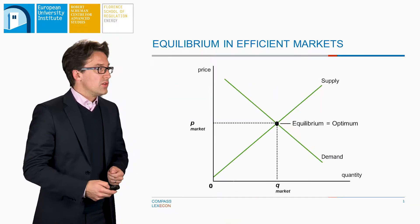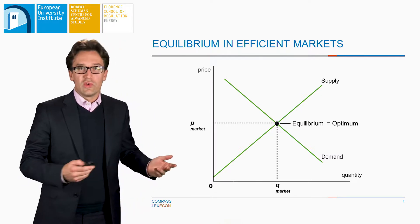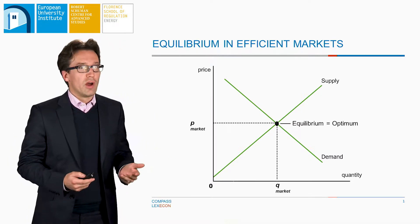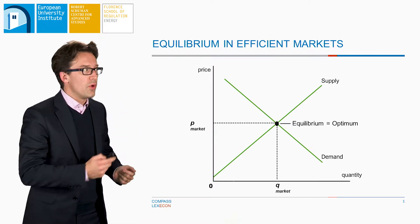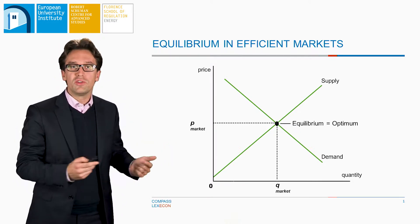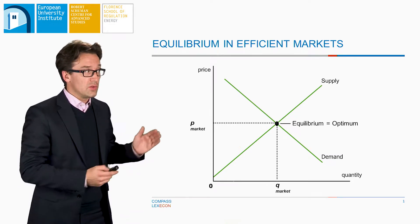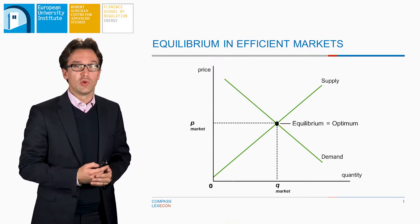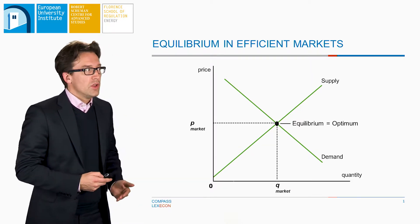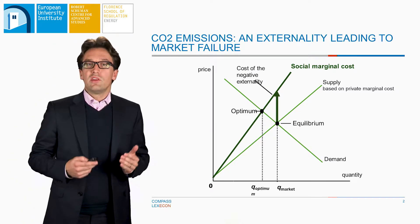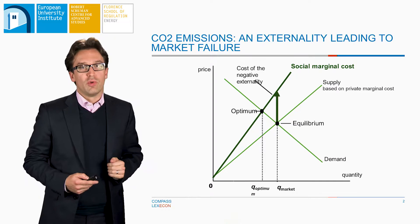Let us start first with the theory. In an efficient market, the equilibrium price is determined by supply and demand crossing in a single point which determines the price and the quantities produced. What is important is that in that case the supply curve, the production of that good, is only taking into account the private cost of production. Typically, the social costs can be different from the private cost of production.